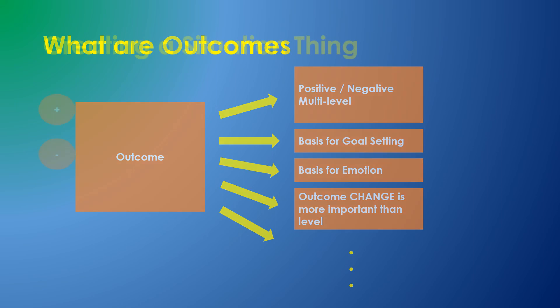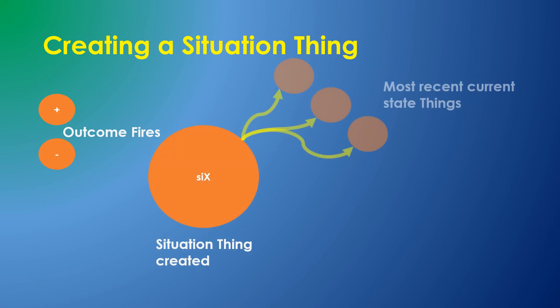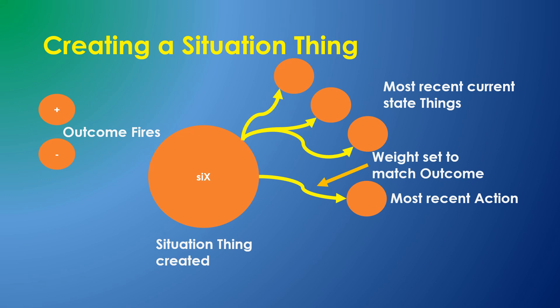For reinforcement learning, the sequence of events starts when Sally receives an outcome. She can then allocate a new situation thing and then add links to the most recent current state things and a link to the most recent action. The weight of the action reference is set to match the outcome which fired. If a relevant situation already exists, Sally will simply add an additional weighted action.